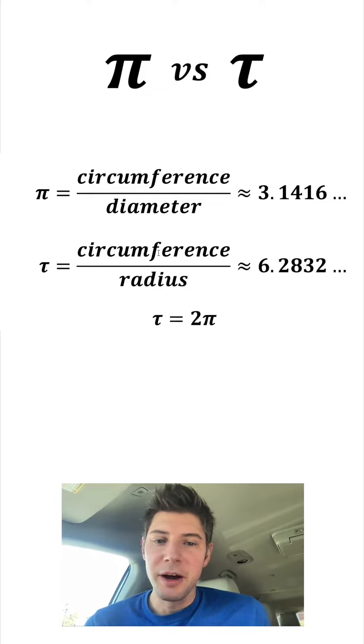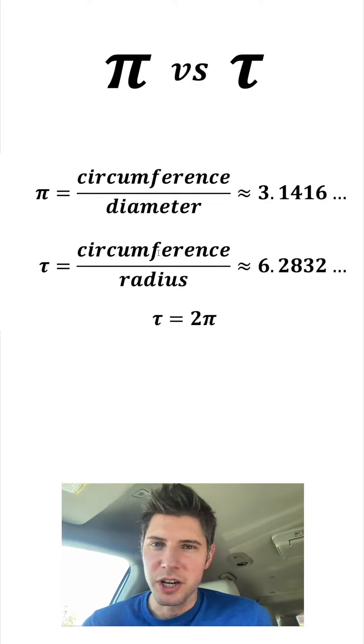So tau is a naturally occurring ratio, but all of our stuff involving circles is in terms of pi. So it's easiest to think of tau as just two times pi.